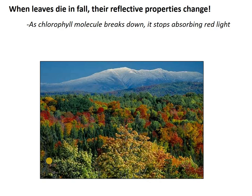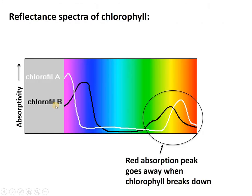As leaves die, their reflectance spectra changes because the chlorophyll molecule breaks down. As chlorophyll stops being produced and the remainder breaks down, it stops absorbing red light. As that happens, instead of being absorbed, that red light is reflected back to your eye — and suddenly these trees are turning red because they don't have any more chlorophyll. Here's the absorption spectrum of chlorophyll, and notice these absorption peaks in the red. When chlorophyll breaks down, these go away — that leaf starts reflecting red instead of absorbing it, and everyone gets on a tour bus to Vermont.